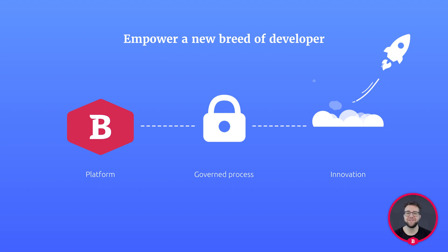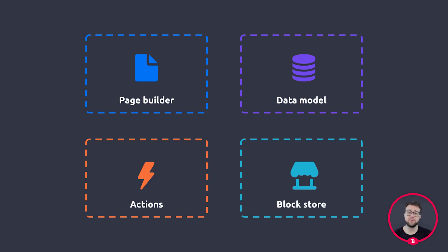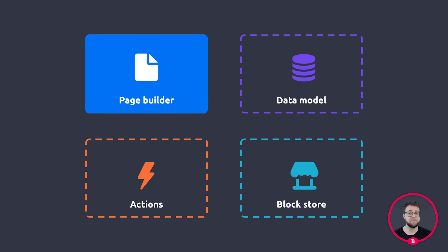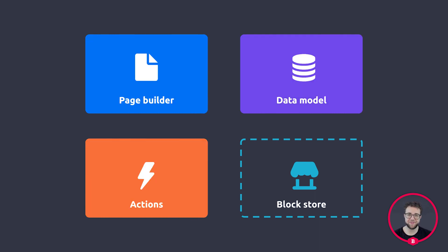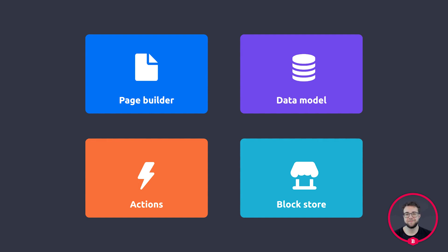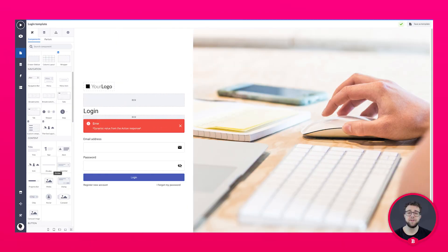A citizen developer needs a platform that empowers him to build these apps, so let's have a look at the BettyBlox platform. In the platform, there are four major platform pillars: the page builder, the data model, the action builder, and the blog store. In the page builder, you can build your front-end in a fast and easy way, using the drag-and-drop interface.